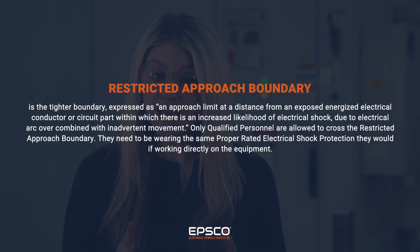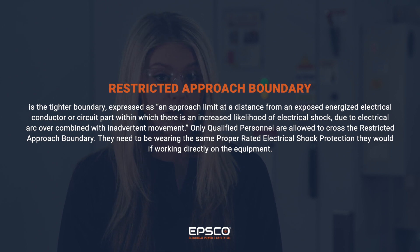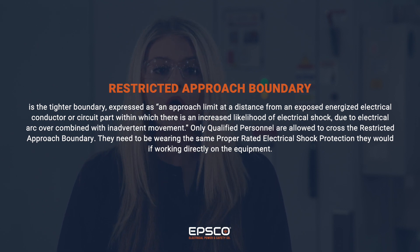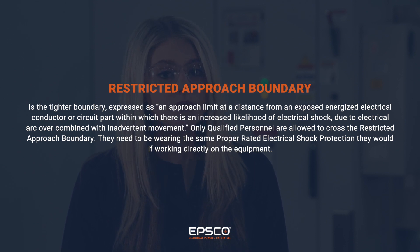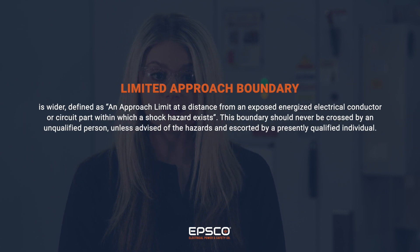The other two boundaries are independent of the arc flash boundary. The aim of both is to reduce the risk of electrical shock. The restricted approach boundary is the tighter boundary, expressed as an approach limit at a distance from an exposed energized electrical conductor or circuit part within which there is an increased likelihood of electrical shock due to electrical arc-over combined with inadvertent movement. Only qualified personnel are allowed to cross the restricted approach boundary, and they need to be wearing properly rated electrical shock protection as they would if working directly on the equipment.